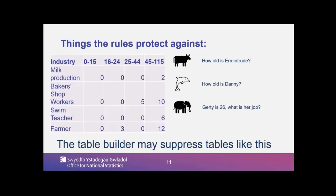You can see we do get low counts in the table. We had a question about why there are ones even in our low area tables — that is simply because so long as there is doubt about whether they are genuine ones, that is OK. Another thing to note: there are structural zeros left in the table. You cannot be 0 to 15 and have an industry because the census form doesn't ask you the industry question if your age calculates as under 16. The table builder would probably suppress this table — it's very sparse and there are attribute disclosures and all kinds of identification risk in it.